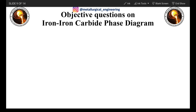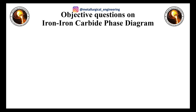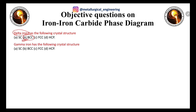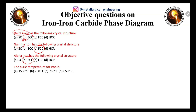Now for objective questions: Delta iron has a BCC crystal structure (high-temperature phase). Gamma iron (austenite) has an FCC crystal structure. Alpha iron has a BCC crystal structure (low-temperature phase). The Curie temperature of iron is 768°C, where alpha iron changes into beta iron. The solid solution of carbon in gamma iron is austenite; the solid solution of carbon in alpha iron is ferrite.